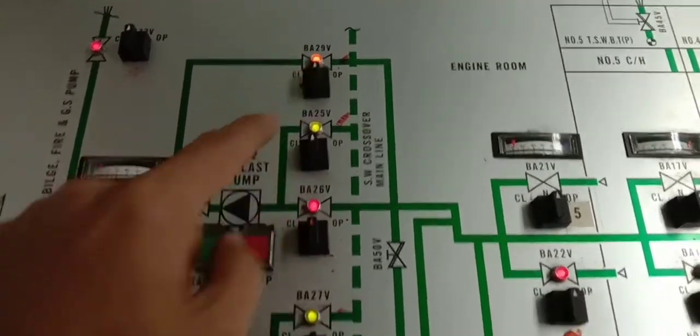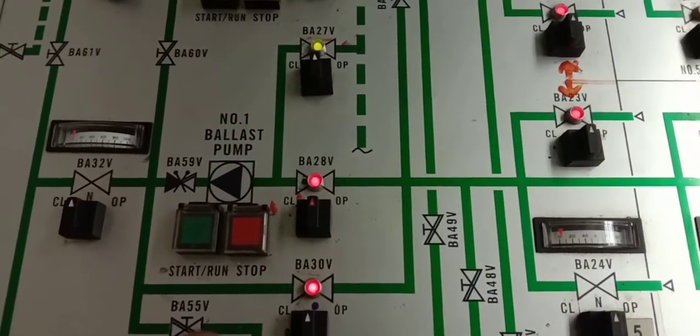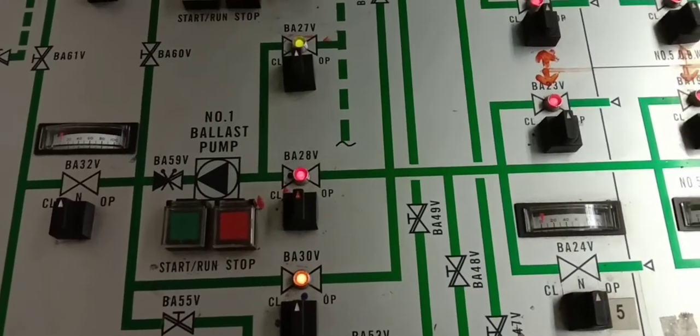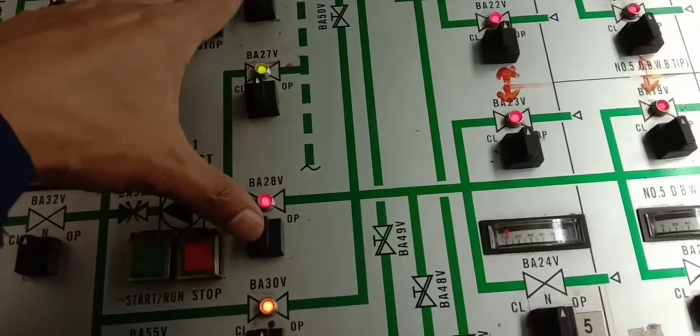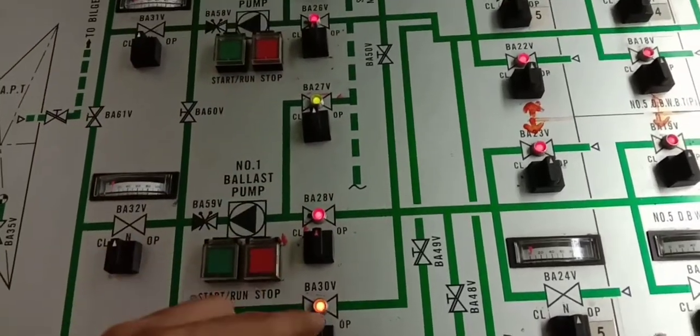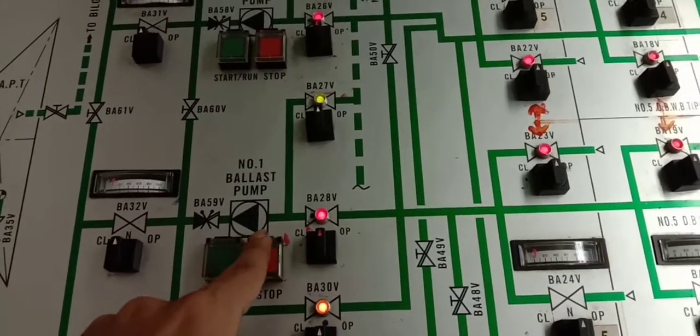Remember, B29 for port side. On the starboard side, you need to open B30. Close already 28 and 26 because those are used for gravity-in. Now we will use the pump for pumping in. Remember, for the port-starboard side pump from the sea chest, the valve is already open.